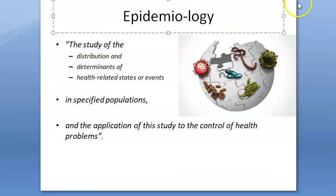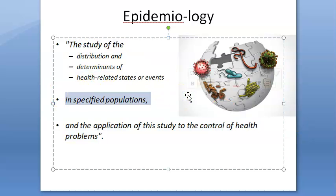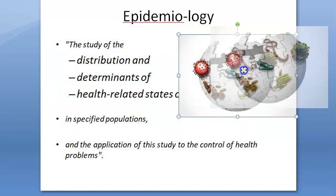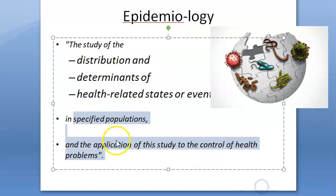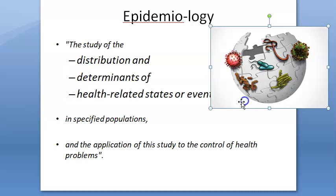The textbook says it is the study of something, and whatever information you get from the study, you will apply it for the control of health problems in a specified population. In that population, you will study the distribution and determinants of health-related states or events. These are the key things to write in the exam.